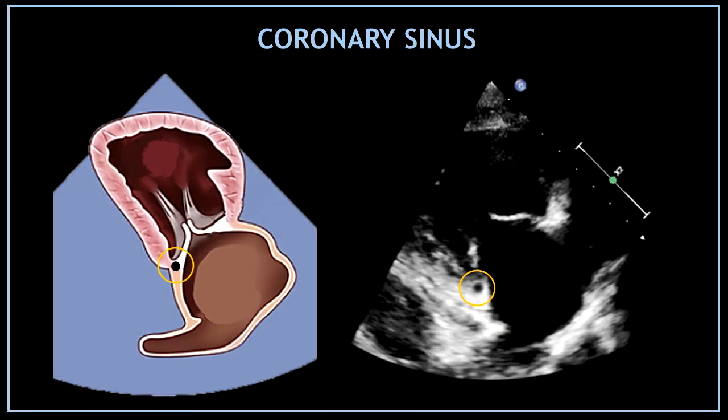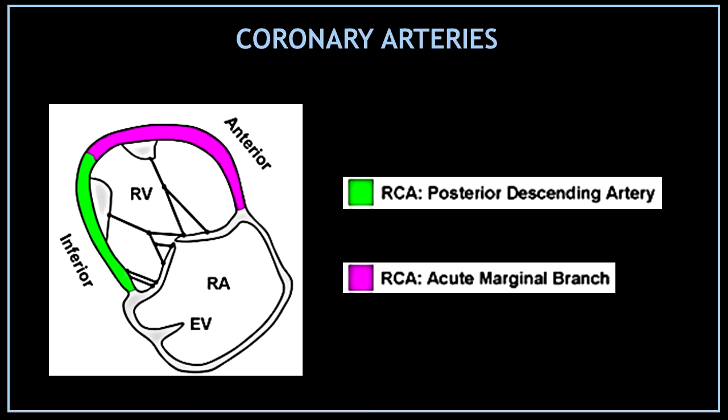This tiny black circle next to the tricuspid valve annulus is the coronary sinus. And here you can find the coronary arteries in charge of supplying blood flow to the right ventricular walls.